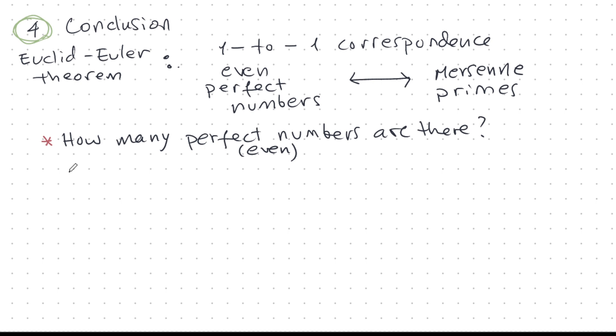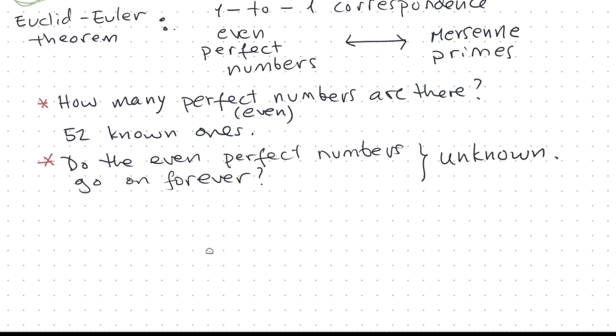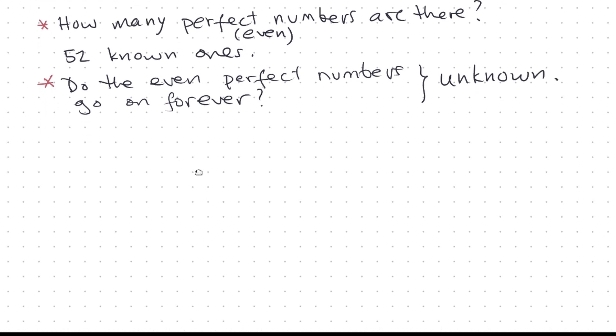So how many even perfect numbers are there? And as of now there are 52 known ones. So another question is this. Do the even perfect numbers go on forever? Or are they finite? That's the same as asking how many Mersenne primes are there? Do they go on forever? And the answer to this is that it's unknown. Believe it or not this is actually completely unknown.